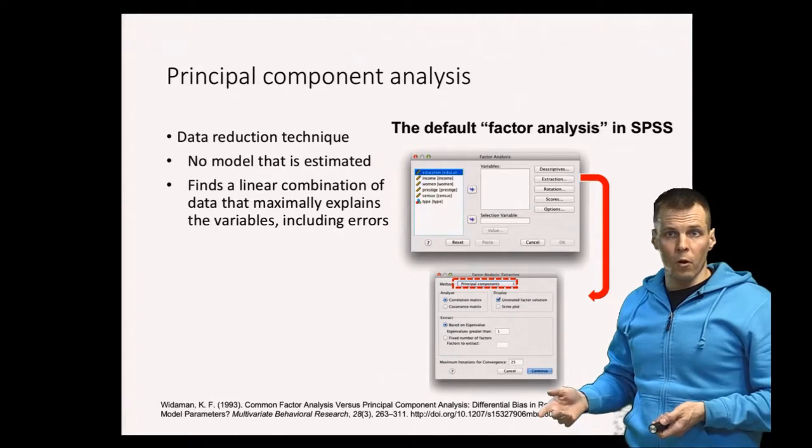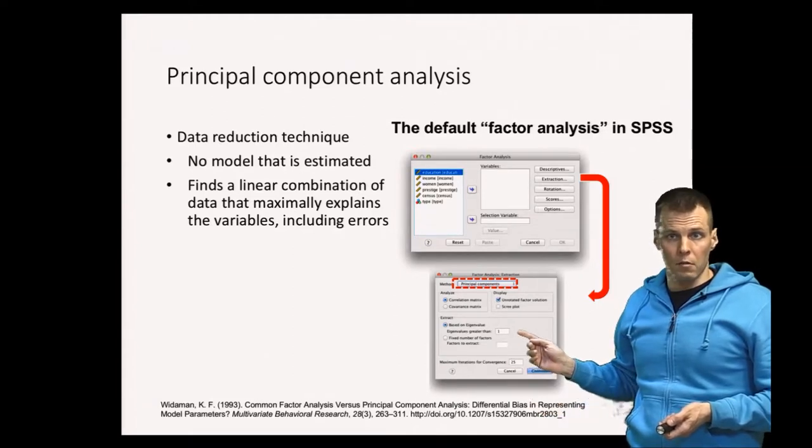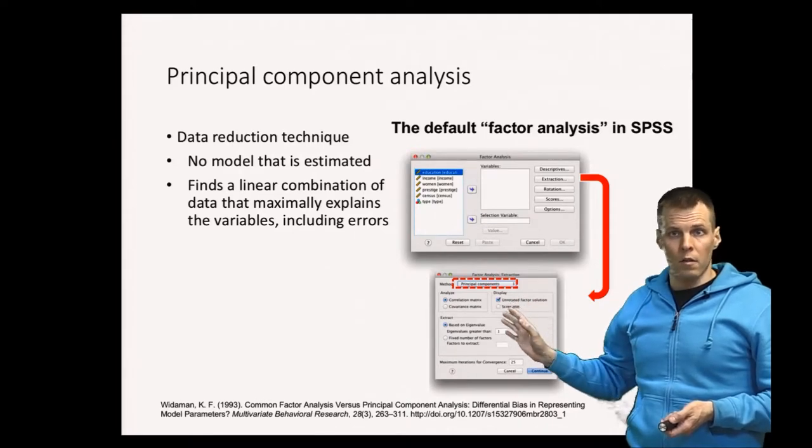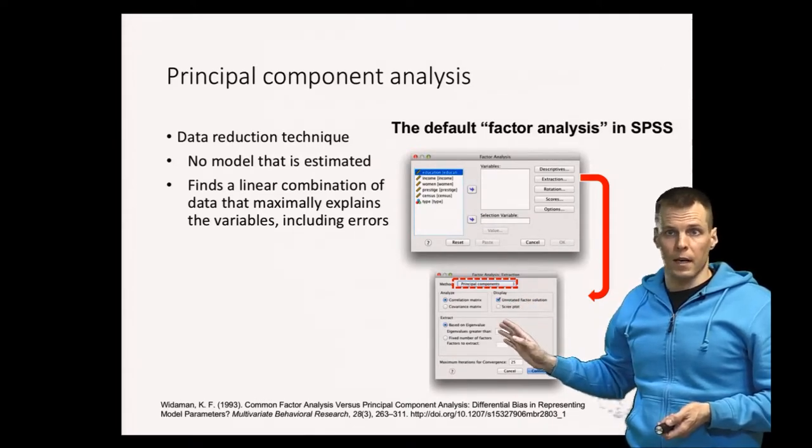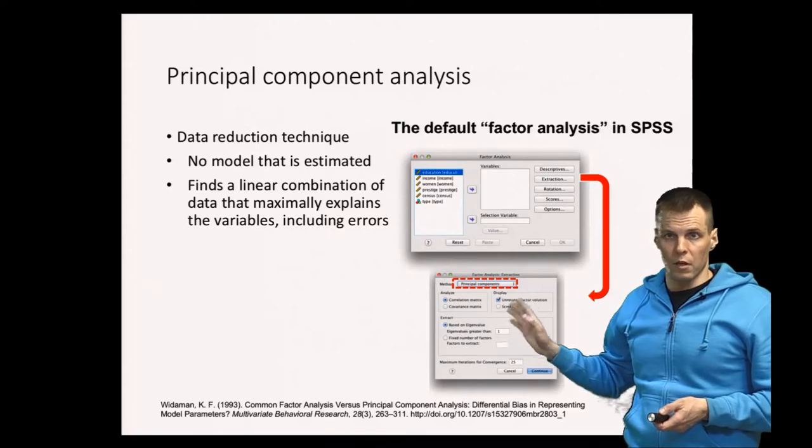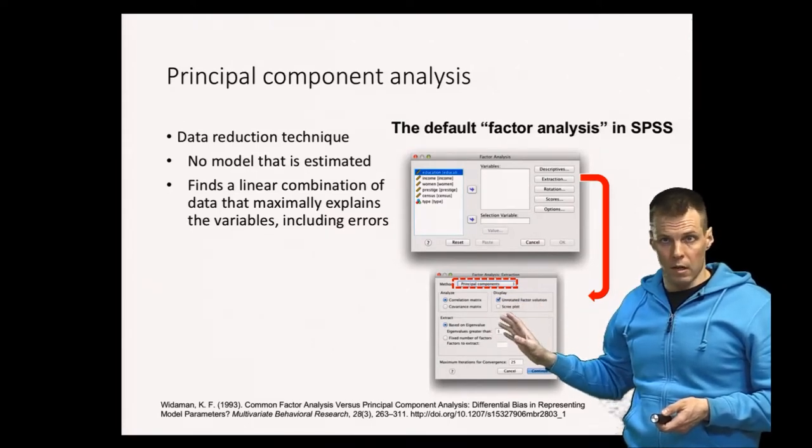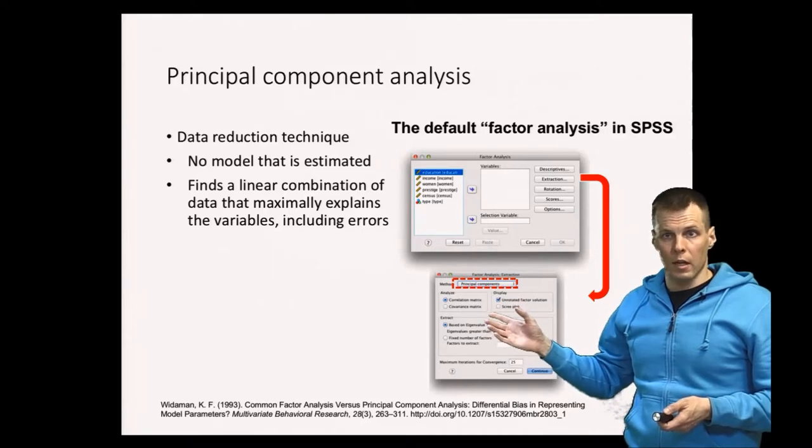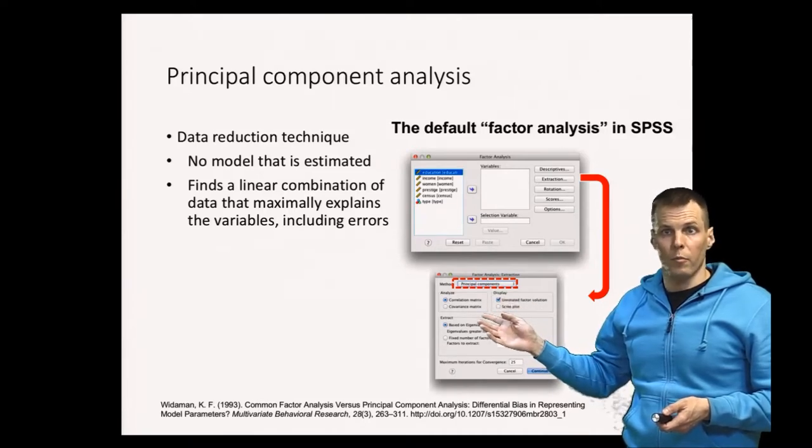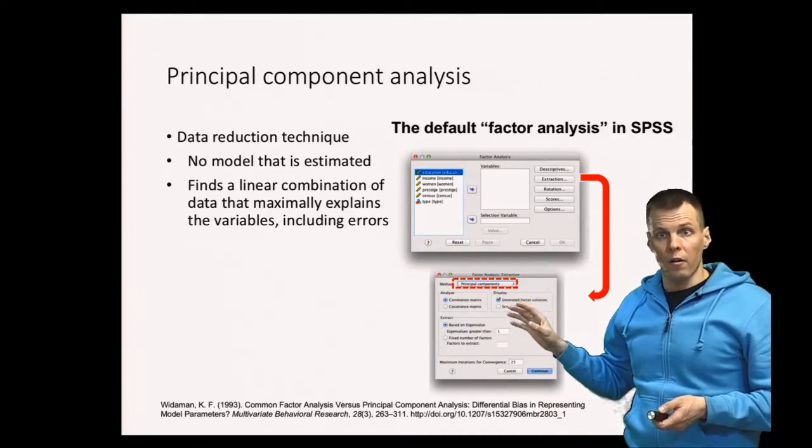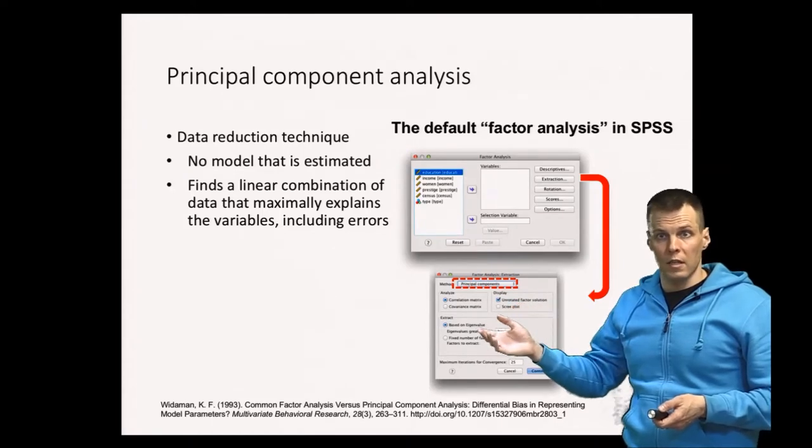The default is to do a principal component analysis, and that's not the factor analysis technique. The others, whether you use principal axis factoring, maximum likelihood, or minimum residual, it doesn't matter because they all estimate the factor analysis model. Principal component analysis is not the factor analysis model because it doesn't discover underlying dimensions; instead it summarizes the data.